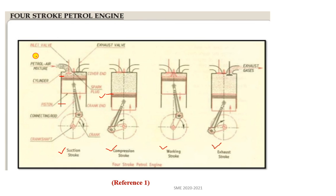During the suction stroke, the inlet valve opens and the petrol-plus-air mixture comes inside the engine cylinder from the carburetor as the piston moves from TDC to BDC. After that, the valve closes. In the compression stroke, the piston moves upward, compressing the air-fuel mixture — both valves are closed. At the end of compression, the spark plug gives a momentary spark, igniting the combustible mixture.